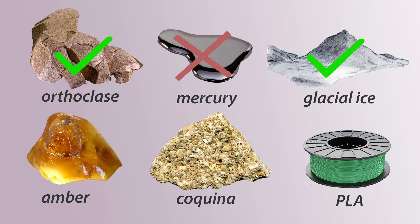Amber is produced from plant resin, so it fails the inorganic test. Coquina fails the inorganic test as well since it's made of fossils that come from living things. It also doesn't have a definite chemical composition since it's composed of many minerals cemented together — this would actually mean it classifies as a rock. PLA is a man-made polymer, so it fails the naturally occurring test.